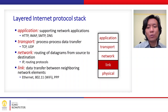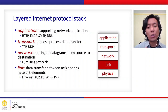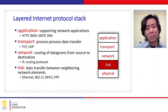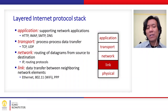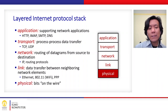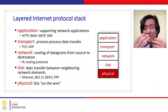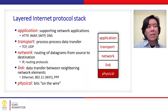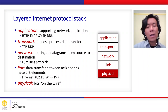Next, going down to the link layer — this layer is logically responsible for data transfer between neighboring network elements, such as from one router to a neighboring network element. Protocols involved include Ethernet, Wi-Fi, and others. The last layer is the physical layer, which is responsible for transferring the actual bits of data through the cable, or via radio electromagnetic signals in wireless networks.